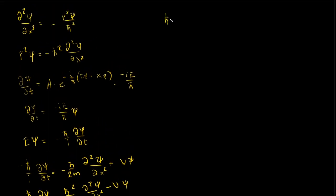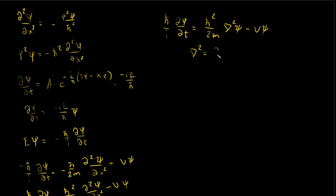The same can be written in three dimensions as iℏ times ∂psi/∂t equals minus ℏ²/2m times del-squared psi plus V·psi, where del-squared equals ∂²/∂x² plus ∂²/∂y² plus ∂²/∂z², which is also called the Laplacian operator.